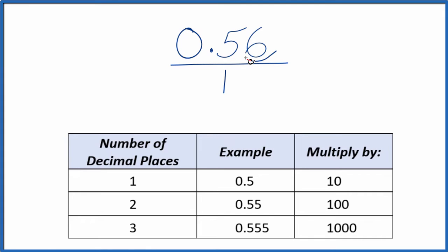I can see I have two decimal places after the zero here. So with two decimal places, I'm going to multiply by 100. I multiply the numerator by 100, and that ends up giving me 56. 100 times 0.56 is 56.